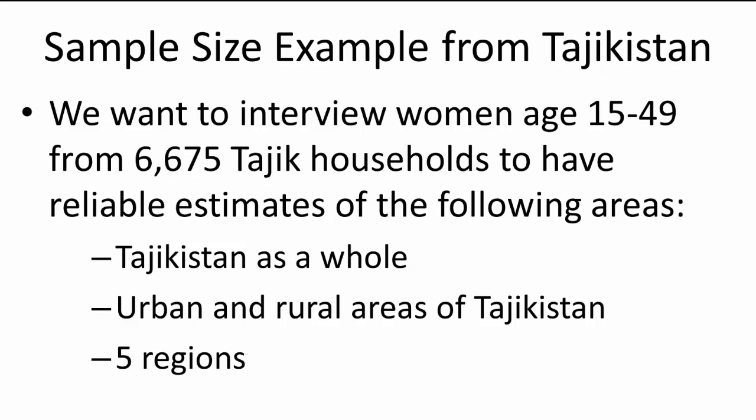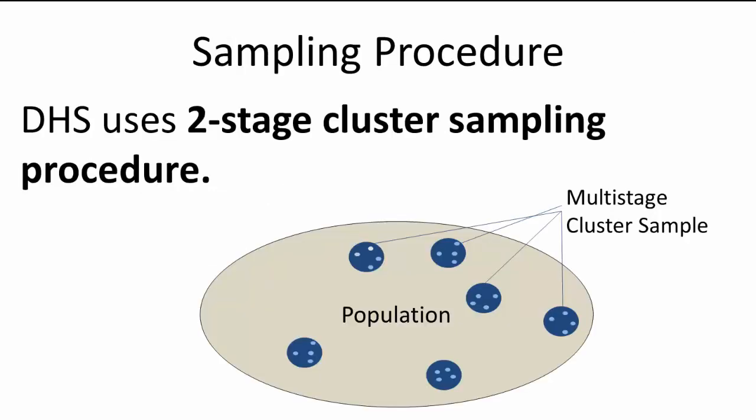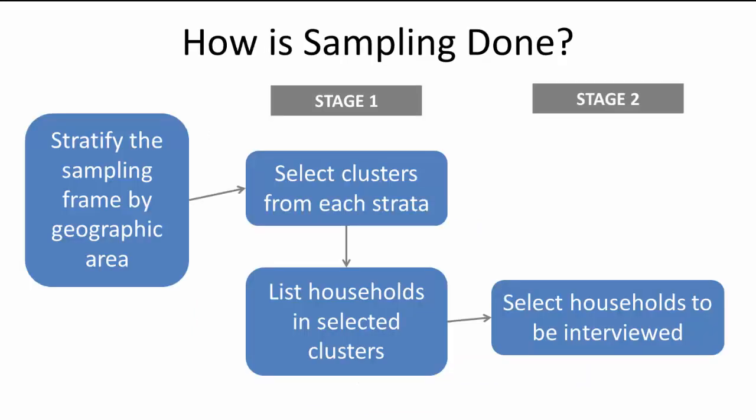How do we reach all women aged 15 to 49 and the designated 6,675 households in an efficient way to get representative survey results? We can accomplish this with a sampling procedure called a two-stage cluster sampling procedure. While ideally we would use simple random sampling to select households or individuals, due to the availability of sampling frames, budget constraints, and time, it is not always possible. This graphic gives a basic visual overview of the two-stage cluster sampling procedure used for the majority of DHS surveys.